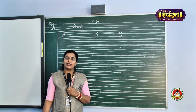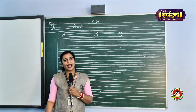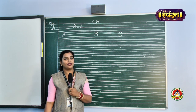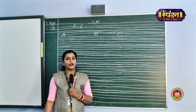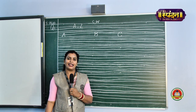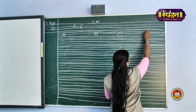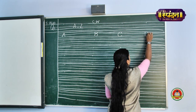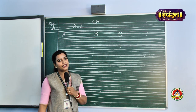Our next alphabet is D. D stands for dog, D stands for drum, D stands for dragon too. And your favorite dolls also start with the alphabet D. Come on, let us write alphabet D. Start from the pink line, bring it to the next black line and make a curve. This is alphabet D.